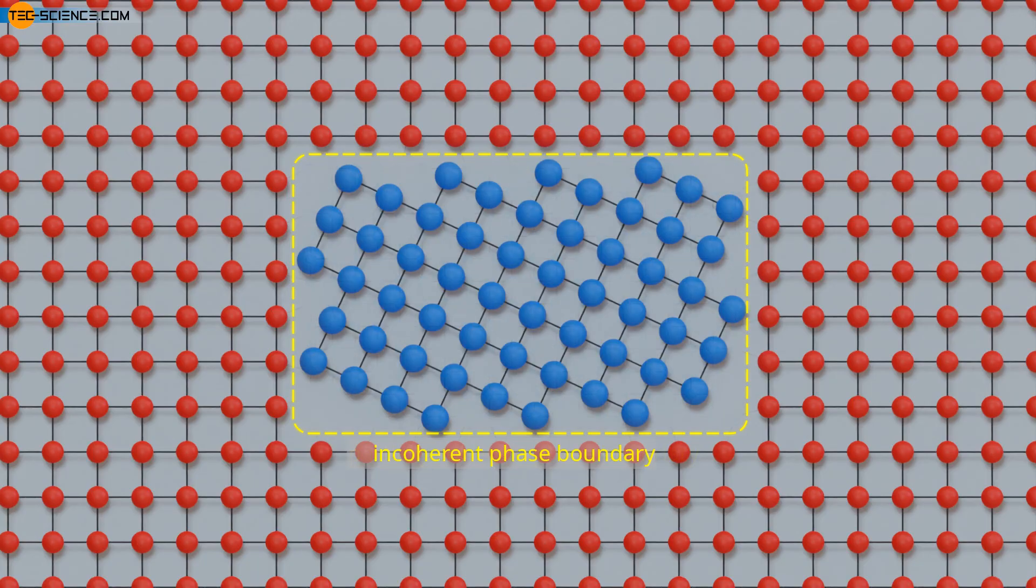In an incoherent phase boundary, on the other hand, neither the lattice structures nor the chemical properties of the two phases match. The structure is similar to that of a high-angle grain boundary, but consists of two distinct adjacent phases, which are not as distorted as in a high-angle grain boundary.